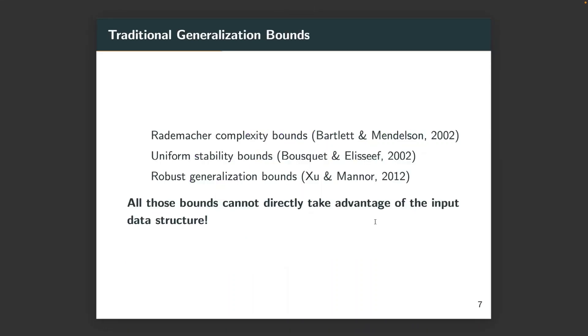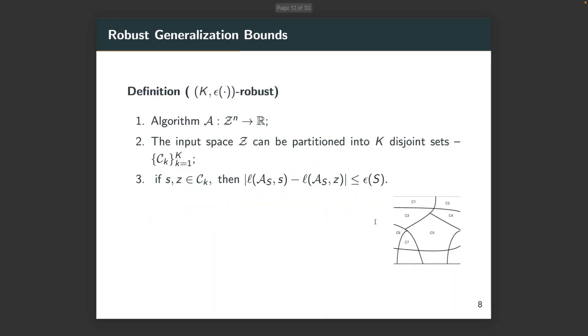However, for many traditional generalization bounds, such as Rademacher complexity bounds, uniform stability bounds, and robust generalization bounds, all those bounds cannot directly reflect the input data structure. And especially for the robust generalization bounds, there are dominating terms that are even data distribution agnostic.